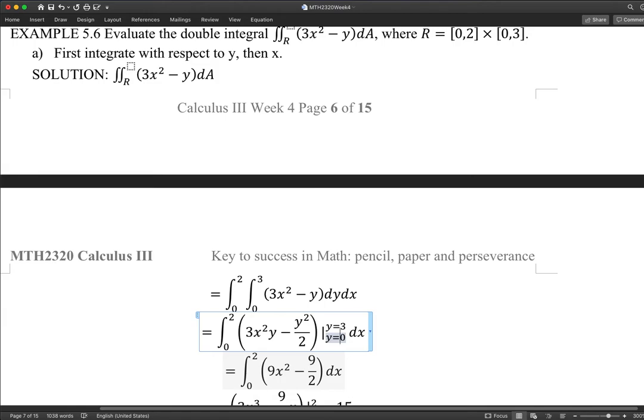You replace y with 3 and replace y with 0, do a subtraction. Replacing y with 0, the entire thing is 0 because each has y there. Replace y with 3, that's how I got 9x squared. And the y squared would be 9. 3 times 3, that's 9x squared.